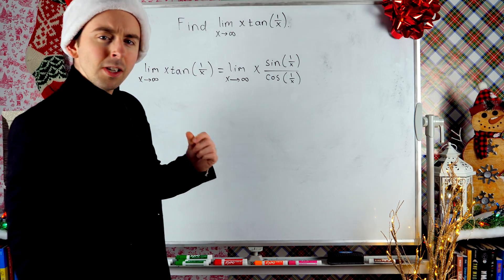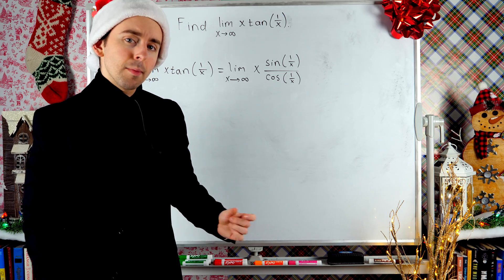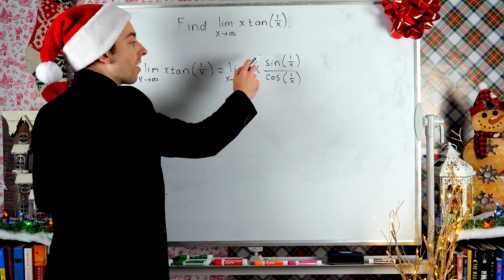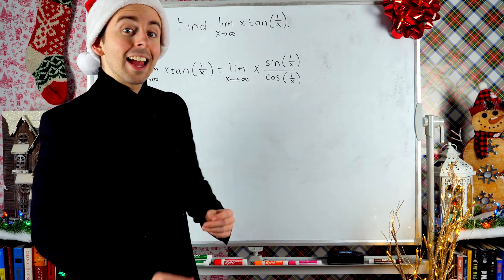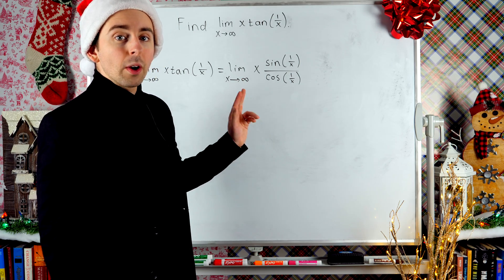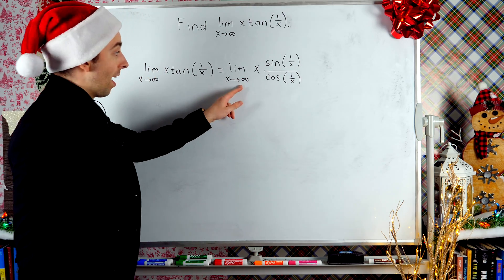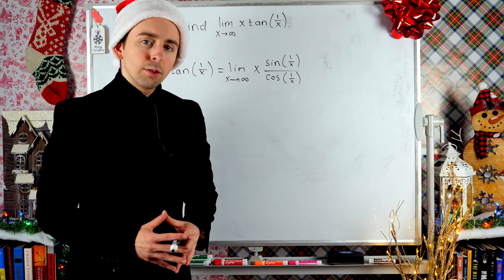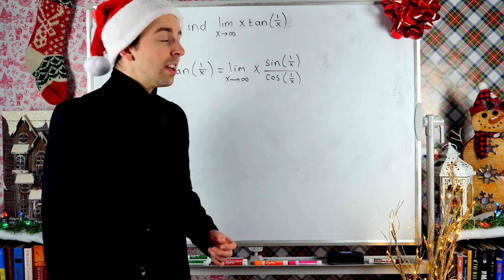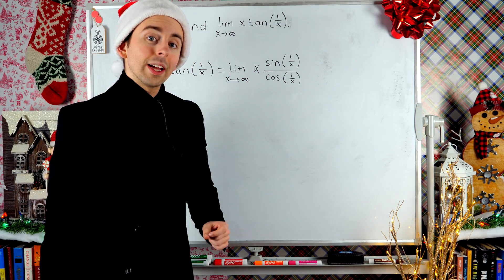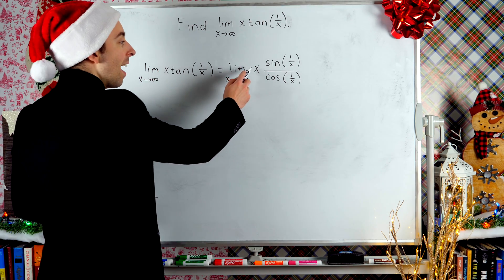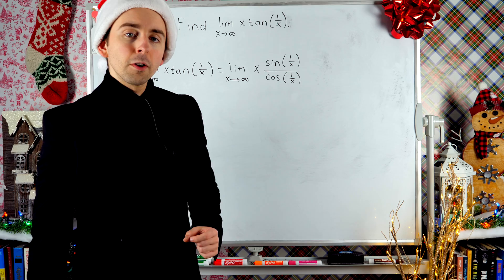Now do you see a way that we could use the limit product rule? I notice that we've got x times sine of 1 over x, and that is a familiar limit. I did a video previously showing what that limit equals with x approaching infinity — I'll leave a link in the description to that lesson. If you're not familiar with that limit, I'll give a quick recap here. The key is I see x times sine of 1 over x, which is familiar to me.